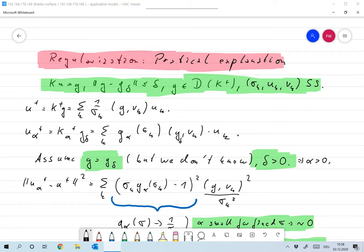Let me quickly remind you what we did up to now. We have the inverse problem ku equals g. We have an approximation to g with the error bound delta. We always assume that g is in the source space of k plus and we assume that k is compact and that we have a singular system sigma k, u k and v k.